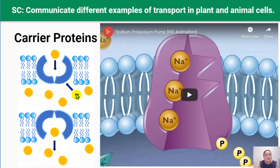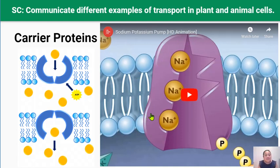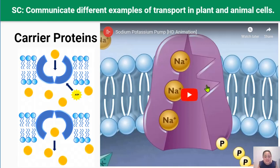In active transport, molecules bind to a specific carrier protein, and this carrier protein changes shape to release molecules on the other side of the cell membrane. This process of changing shape needs energy because carrier proteins are moving molecules against the concentration gradient. The most well-known example is the sodium-potassium ATP pump. This pump transports sodium ions to one side of the membrane and potassium ions to the other. Sodium binds onto the carrier protein, ATP is used to change the protein shape, allowing sodium to be released. Then potassium binds, energy changes the shape again, and potassium is released to the other side — all against the concentration gradient.